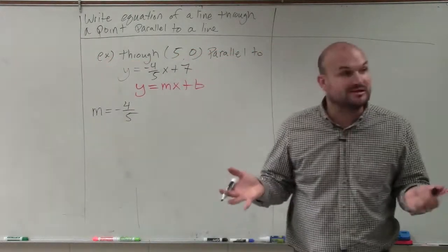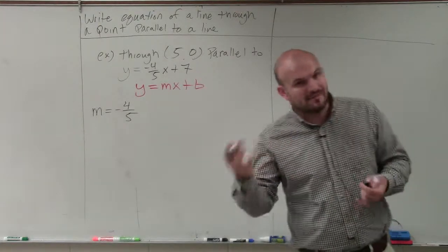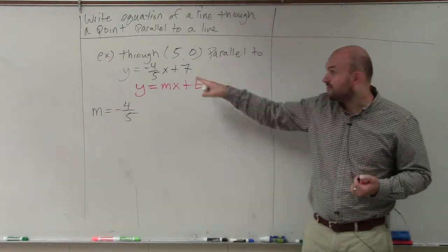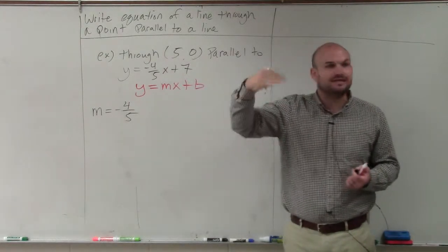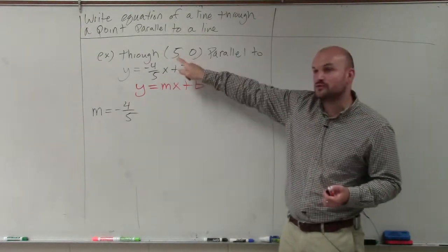Now, the only thing we don't know is the y-intercept. A common mistake students make is saying the y-intercept is 7. No, that's for this line. We're writing a new line that has to go through the point (5, 0).